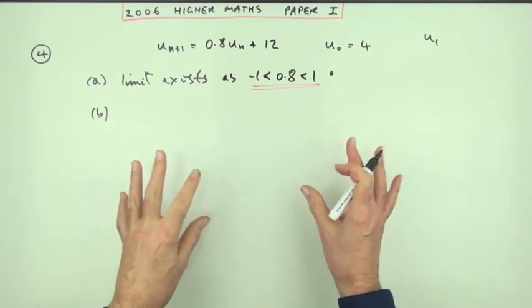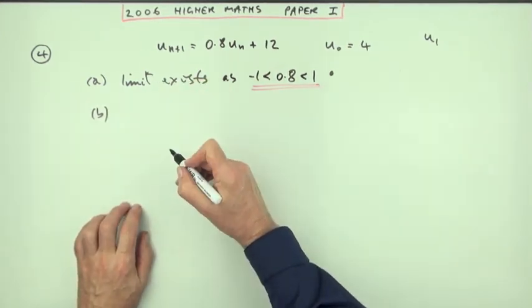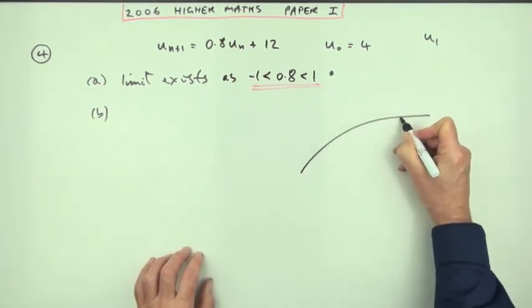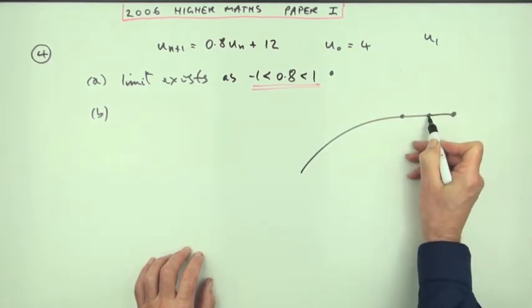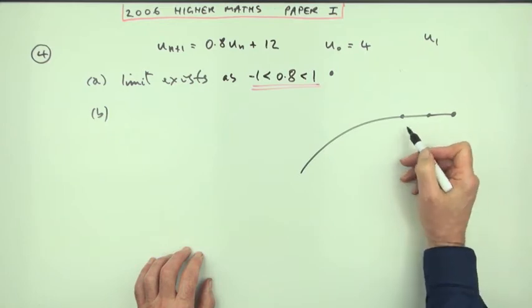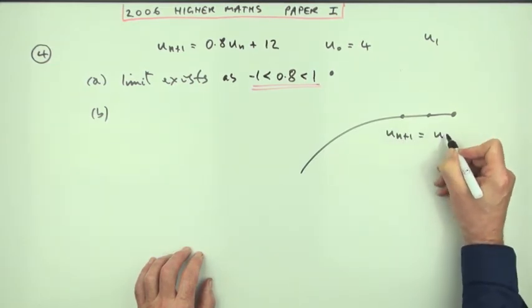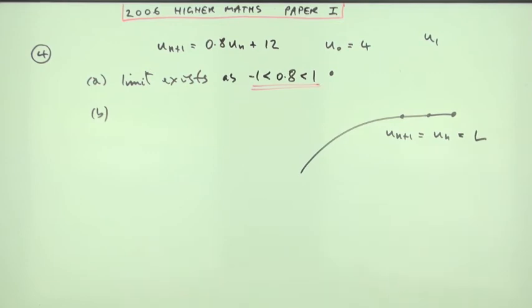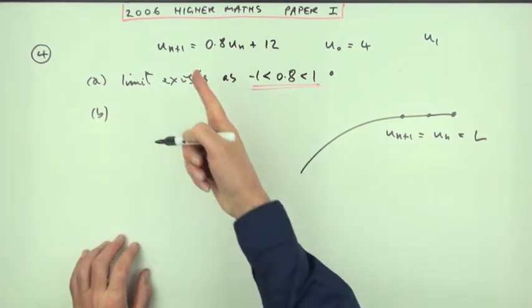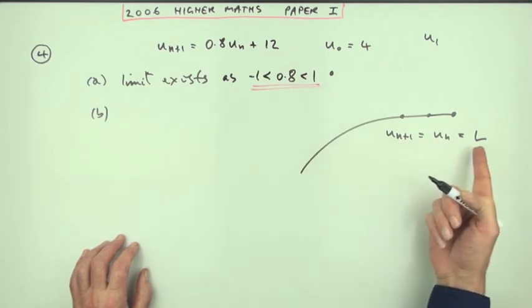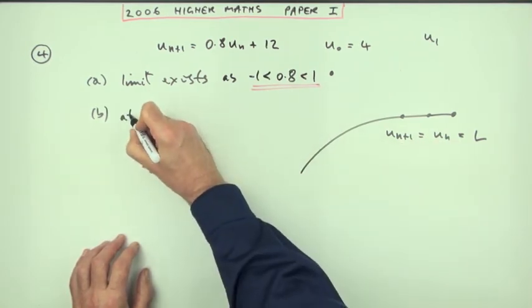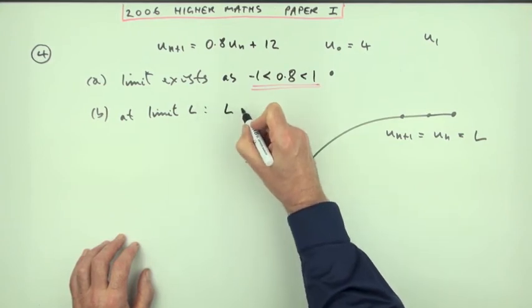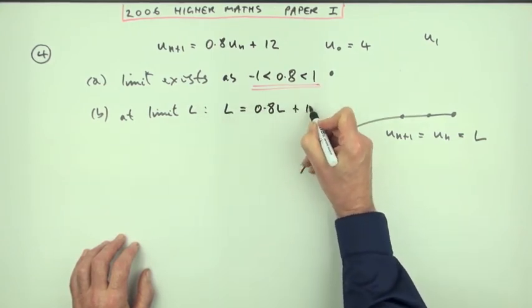Now you can either go through it formally or you could put down the formula. The formula L equals B over 1 minus A comes from the fact that you'll reach the limit when the following answer is the same as the previous answer. You'll have reached the limit when Un plus 1 simply equals the previous one Un and it will happen thereafter and that will equal that number L, the limit. Which means that you could take your expression and replace them with the limit L. So you could say at the limit L, you'd have L would equal point 8 of L plus 12.